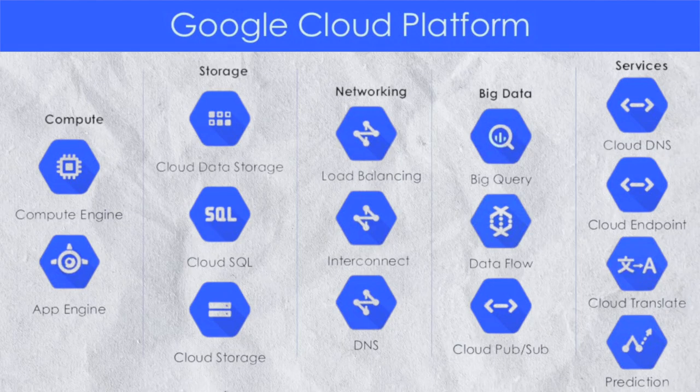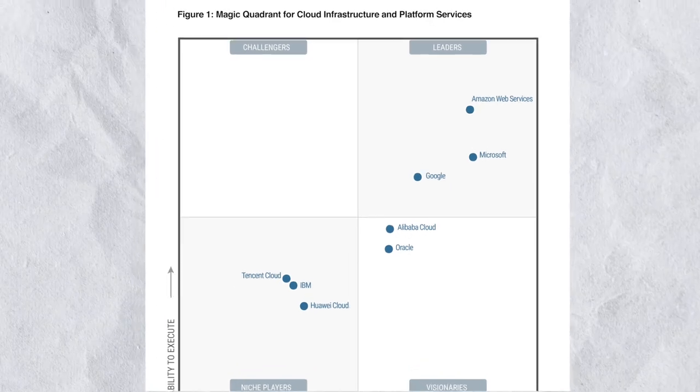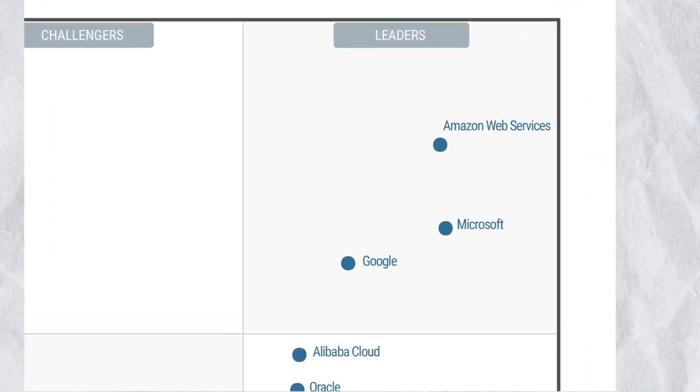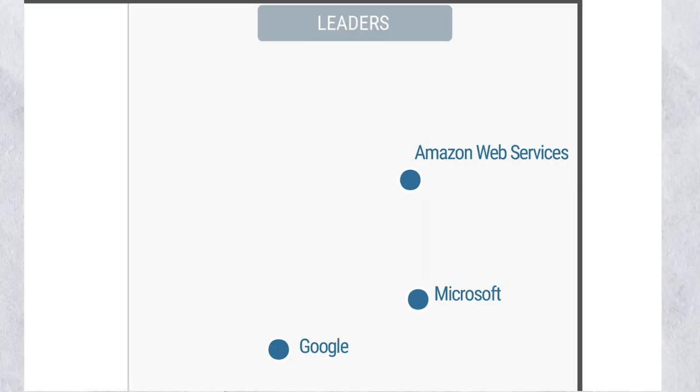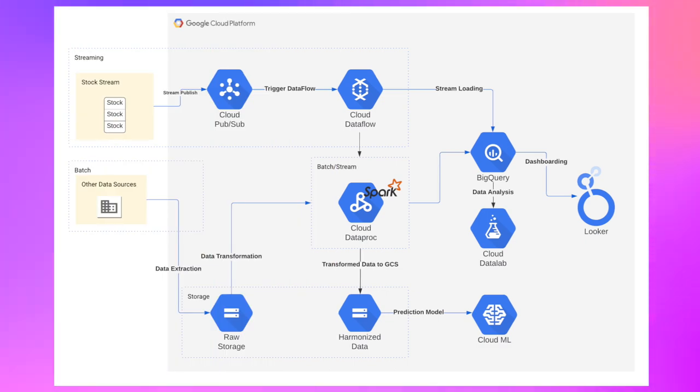In this video, we will build a stock market data pipeline using Google Cloud Platform and understand the important services you need to know as a data engineer. When you look at the Gartner quadrant that ranks different cloud providers, GCP or Google Cloud Platform comes under the top 3 cloud platforms. I have spent my last 4 years working on Google Cloud and worked on many different projects. Most of the videos I have seen online around this topic just list different services and tell you to learn them. But this is not the right way. Instead, we will take one reference architecture diagram and I will show you how these services come together and how real-world projects are built.